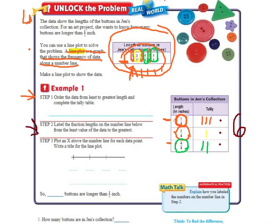Alright, step number 2. We're going to label the fraction lengths on the number line below from least to greatest. We already did that here. So it's going to be really easy. We're just going to write it down here. This is 1/4. This is 3/4. And then this one... Actually, I'm sorry. We've got to go in order. 1/4, 2/4, 3/4, and 4/4.